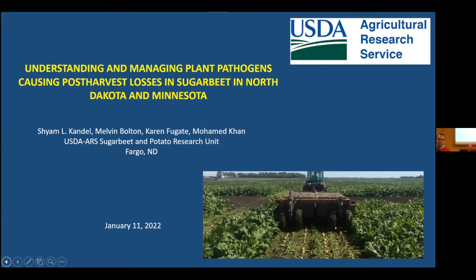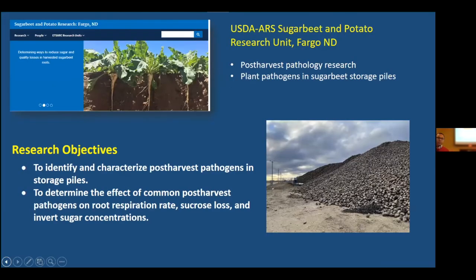Today I'm going to briefly talk about my research program, including ongoing research and the research plan for the near future. I am focused on post-harvest pathology and storage disease in sugar beet. The first objective of my ongoing research is to understand the incidence and severity of post-harvest pathogens in storage piles. I am planning to collect samples hopefully covering all factory districts in the Red River Valley. The second objective is to estimate the impact of these post-harvest pathogens on storage properties of sugar beet, including respiration rate, sucrose loss, and invert sugar concentration.